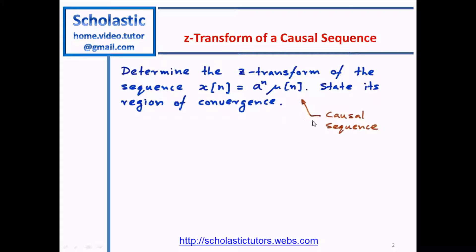This is a causal sequence because the unit step function exists only for n equal to 0 or greater. If the value of n is less than 0, the function mu[n] equals 0. Therefore, this is known as a causal sequence, and once you multiply mu[n] with A to the n, we still get a causal sequence. A can be less than 1, equal to 1, or greater than 1, so A to the power n can either increase or decrease rapidly depending on the value of A.